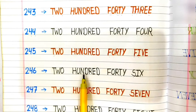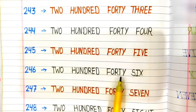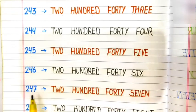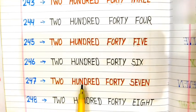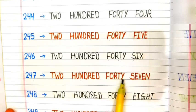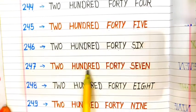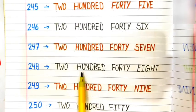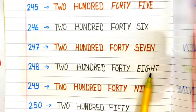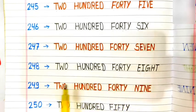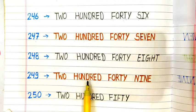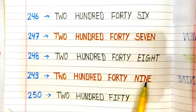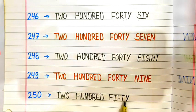246: T-W-O H-U-N-D-R-E-D F-O-R-T-Y S-I-X. 246. 247: T-W-O H-U-N-D-R-E-D F-O-R-T-Y S-E-V-E-N. 247. 248: T-W-O H-U-N-D-R-E-D F-O-R-T-Y E-I-G-H-T. 248. 249: T-W-O H-U-N-D-R-E-D F-O-R-T-Y N-I-N-E. 249. 250: T-W-O H-U-N-D-R-E-D F-I-F-T-Y. 250.